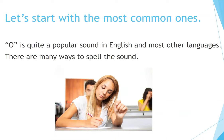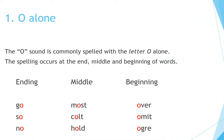Let's start with the most common ones. O is quite a popular sound in English and most other languages. There are many ways to spell this sound. Number 1: O alone. The O sound is commonly spelled with the letter O alone. This spelling occurs at the end, middle, and beginning of words.